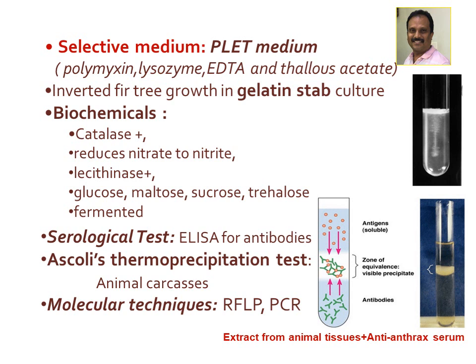In the Ascoli thermoprecipitin test, if bacteria are present in the tissue — meaning the animal tissue is infected — a white precipitate will be seen in the test tube. This is known as the Ascoli thermoprecipitin test: a tube precipitate test for detection of antigens from infected animal tissue. The mechanism involves antigens and antibodies forming a zone of equivalence with visible precipitate.